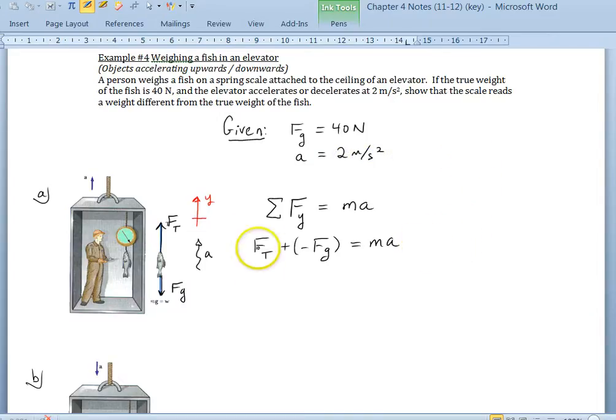Before we can proceed to solve for the tension here, we're going to need to figure out what the mass is, because we know the acceleration, we know Fg, and we need to find that mass. Hopefully you'll remember on the side here that you can calculate the mass of the fish if you assume that the weight is equal to m times g. So the weight is 40 Newtons and the mass times 9.8 meters per second squared. Then we can solve for the mass. That will give us 4.08 kilograms.